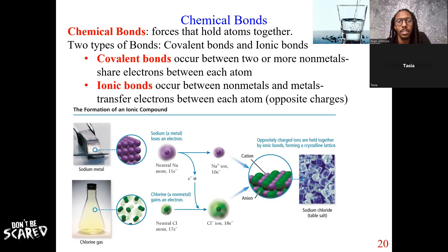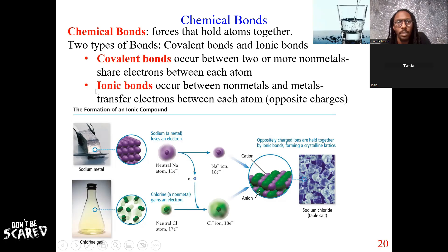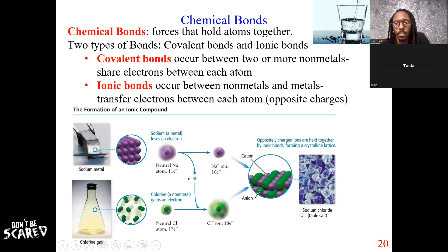With ionic bonds, the atoms have to be ions. Here is an example: salt. So if we look at this, we have sodium and chlorine. With ionic bonds, sodium, which is a metal, likes to lose electrons, and chlorine, which is a nonmetal, likes to gain electrons. During this process, sodium loses the electron and that lost electron goes to the chlorine. The chlorine gains that electron, and the sodium and chlorine come together to form sodium chloride.